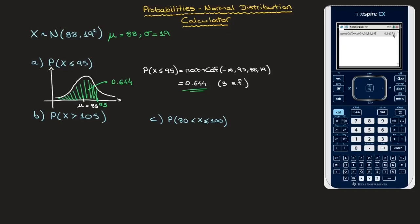Let's look at the next question. We need to find the probability that X be greater than 105. The first thing we need to do is draw a bell curve and show what area that probability corresponds to. The mean is still mu equals 88. To show the area for the probability that X be greater than 105, I find 105 on the x-axis, and since X has to be greater than 105, it corresponds to all of the area on the right-hand side of 105.